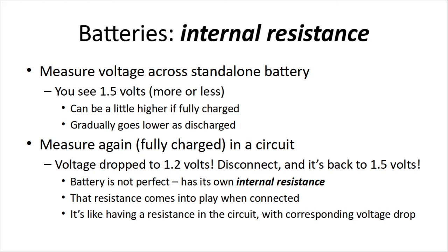Batteries have an internal resistance. If you measure the voltage across a standalone battery, you'll see about 1.5 volts. When new, you might see 1.6 volts or a little more on a rechargeable. It gradually goes lower as the battery discharges. On old flashlights, the battery could drop as low as 1.2 or 1.1 volts and you'd notice the bulb getting dimmer. Newer LED flashlights have circuitry that cuts out below a certain voltage, so your flashlight is either bright or dead.